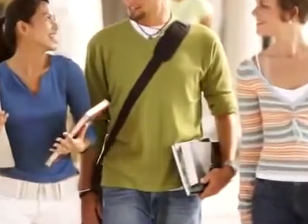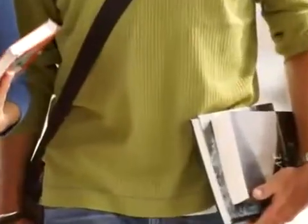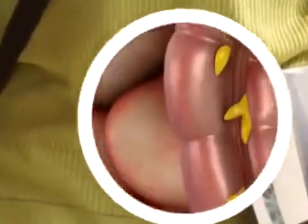Every cell in your body is produced by cell division. Before each cell divides, it must copy its genetic material in a process called DNA replication.